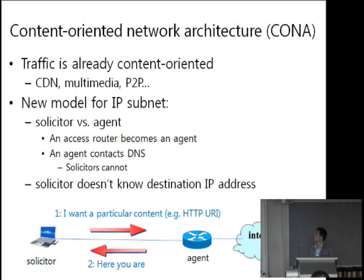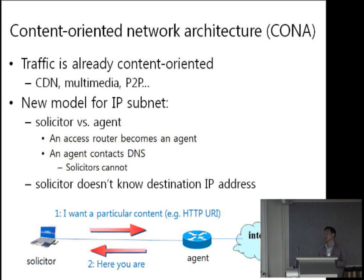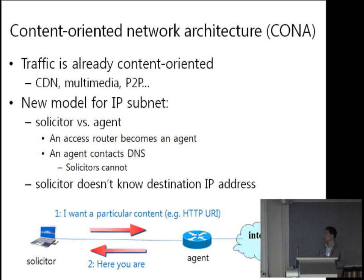With these two mechanisms, I'd like to propose Kona. The majority of internet traffic is already content-oriented, as you know. With Kona, we use a new model for IP subnet interaction between the end host and the access router — let's call them solicitor and agent. An access router becomes an agent; it knows which content identifier is requested by a solicitor or end user. Instead of sending arbitrary packets, a solicitor sends a content request message to the agent specifying some HTTP URL. The agent replies with the data. The end host cannot know the destination IP address and cannot contact DNS directly, which helps prevent DNS poisoning.